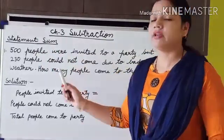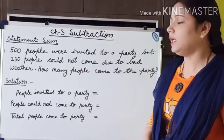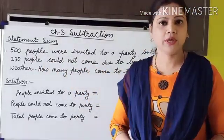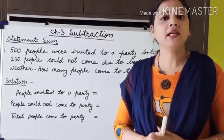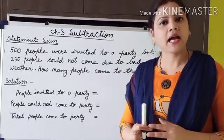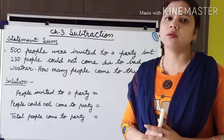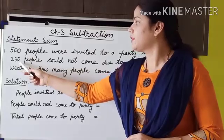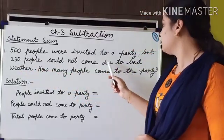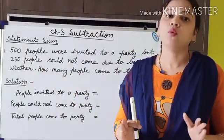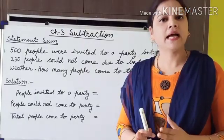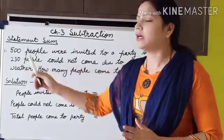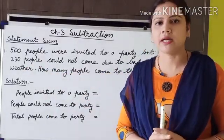Here I have written a question. As you can see, 500 people were invited to a party. A party was being organized and in that party 500 people were invited. But 230 people could not come due to bad weather. That day when the party was held, the weather was very bad, so 230 people decided not to go to the party.